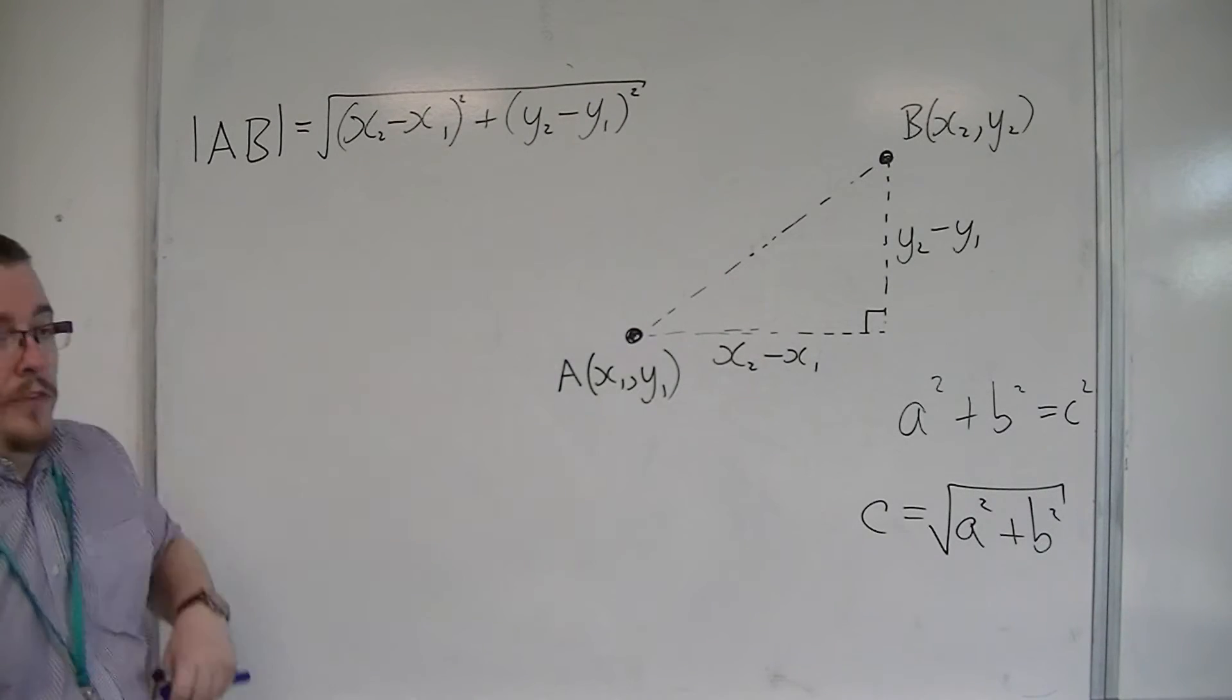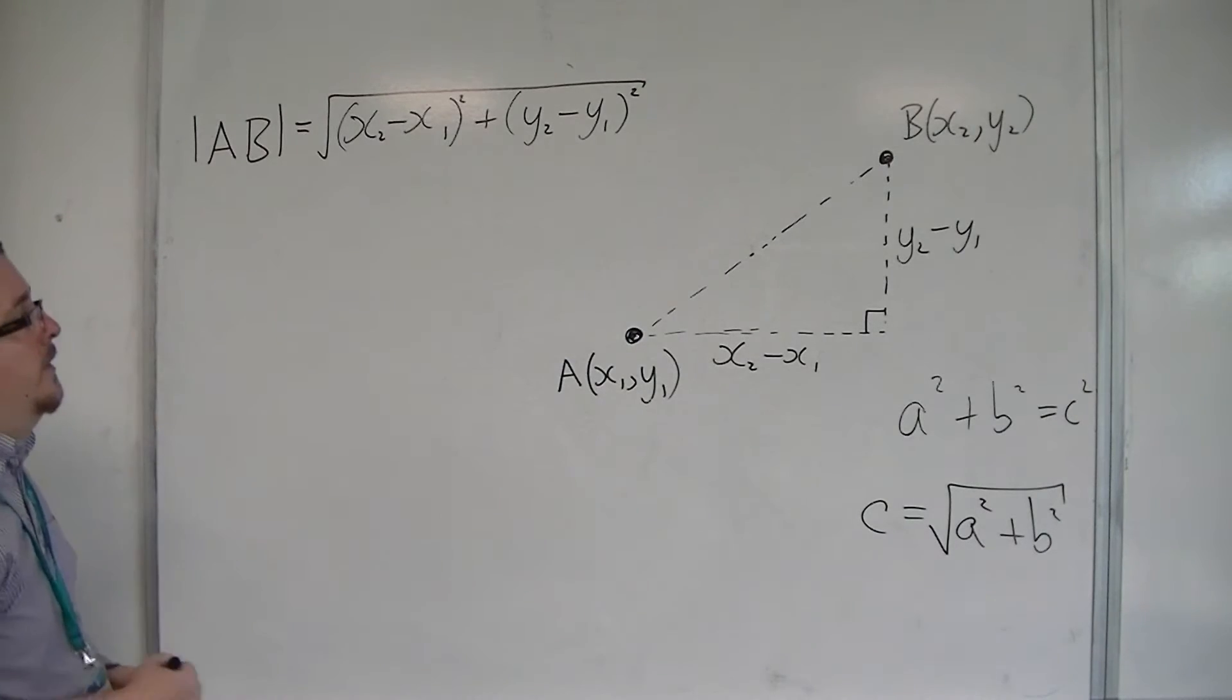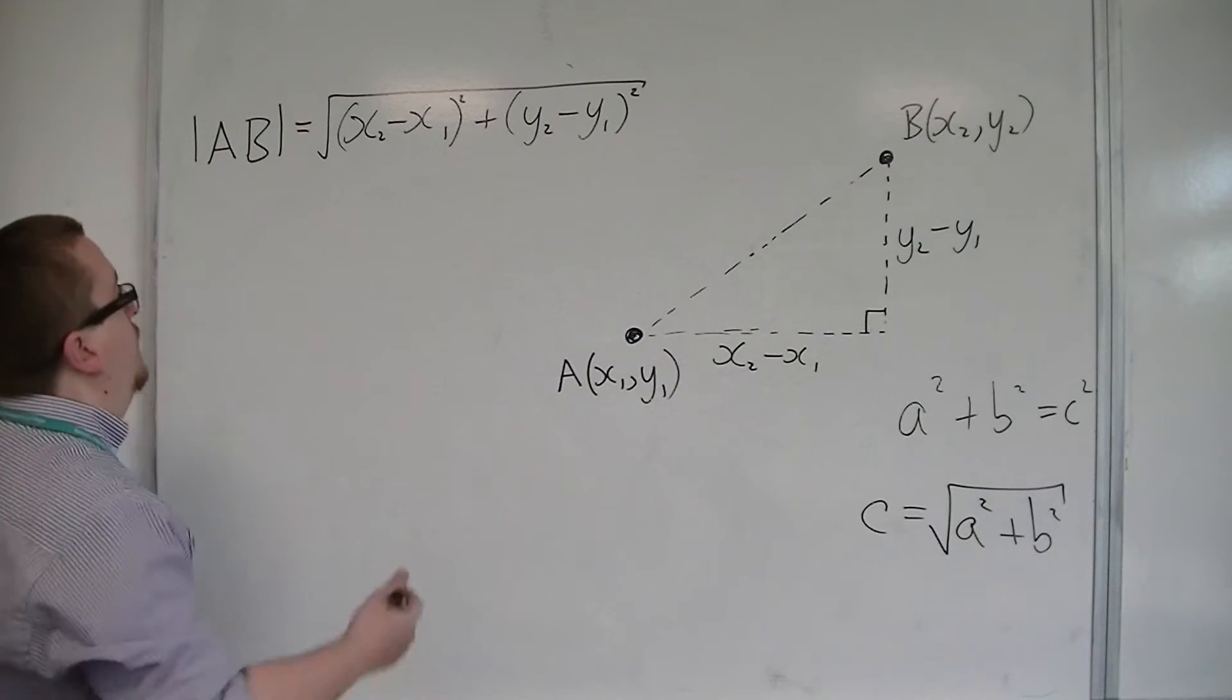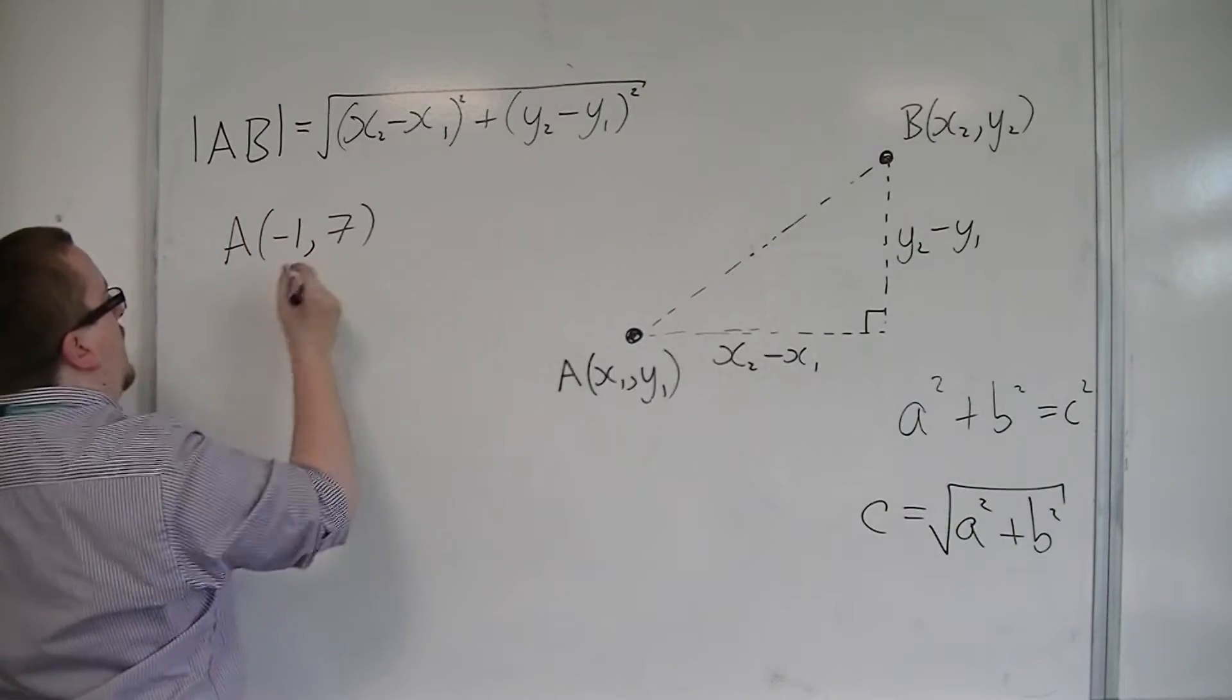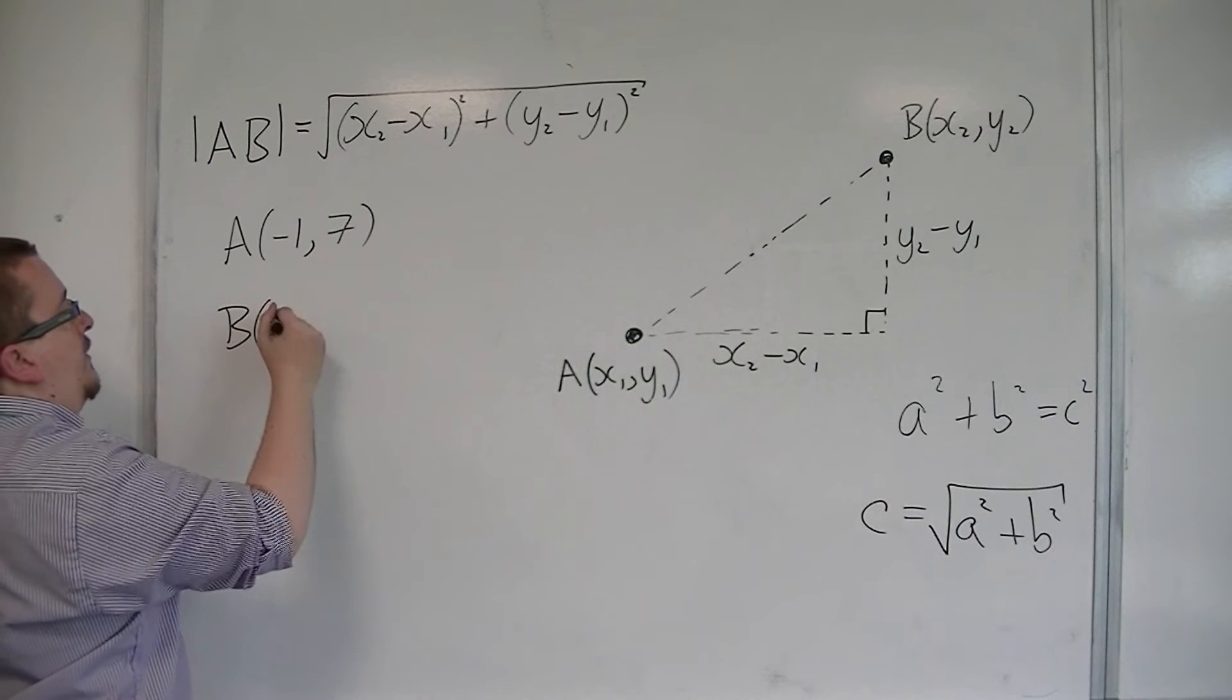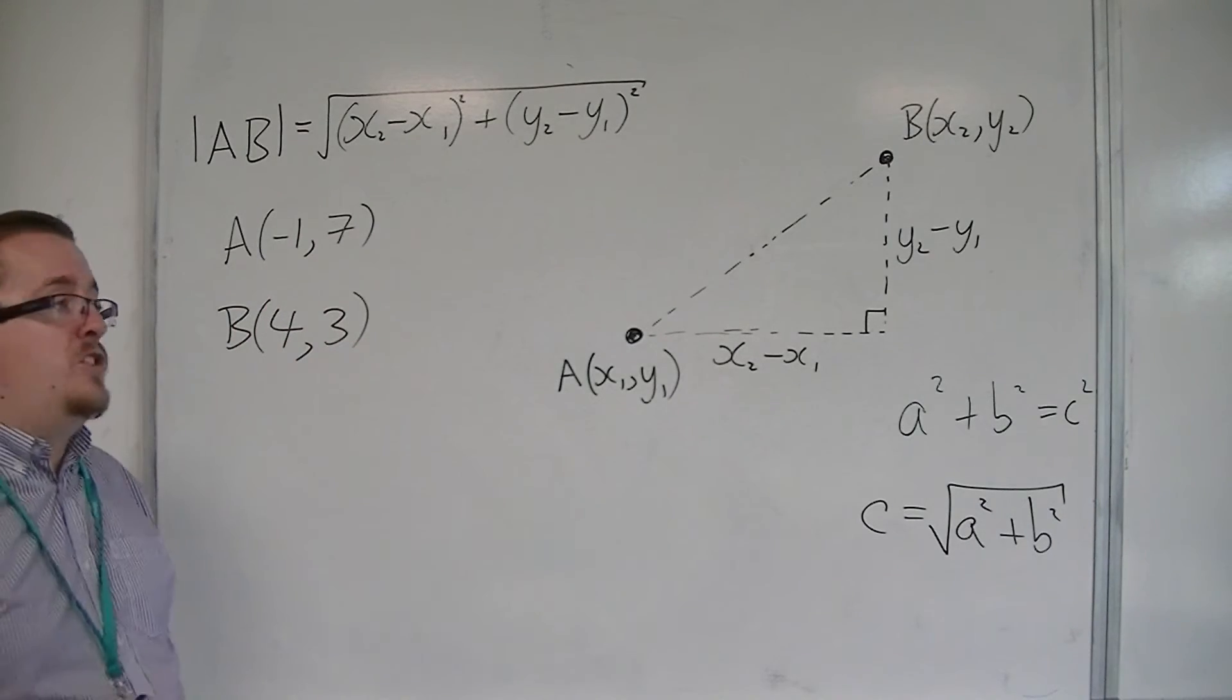So it looks absolutely horrendous, but it is just Pythagoras' theorem. So, for example, if I was looking at the coordinates A is minus 1, 7, and B is going to be 4, 3, and I want to find the distance between them,